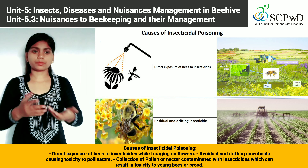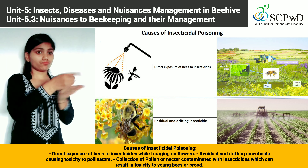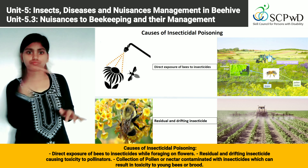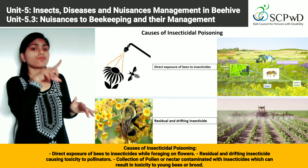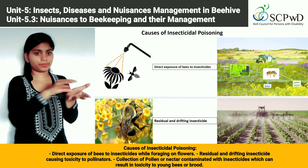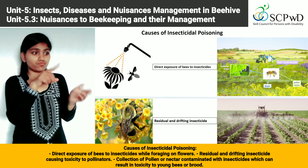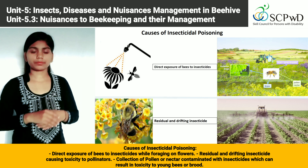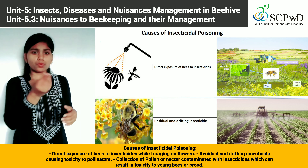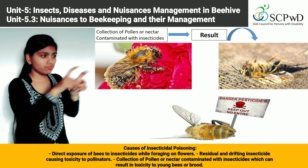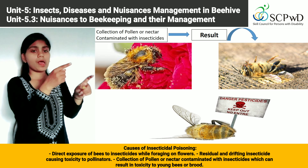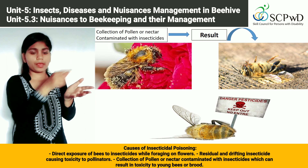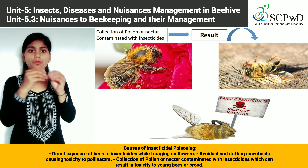Causes of insecticidal poisoning: direct exposure of bees to insecticides while foraging on flowers; residual and drifting insecticide toxicity to pollinators; and collection of pollen or nectar contaminated with insecticides, which can result in toxicity to young bees or brood.